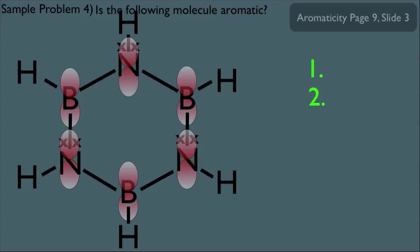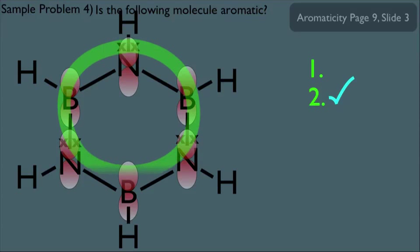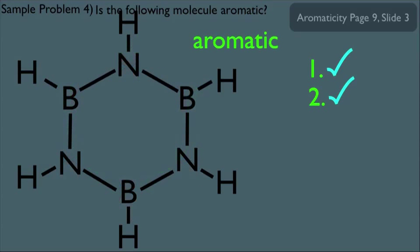Counting our number of pi electron pairs: this lone pair is one pair, this is a second pair, and this is a third pair. So the second criterion is met. And because those borons have unhybridized p orbitals, that creates an uninterrupted pi cloud, so the first criterion is also met. Therefore, this molecule is definitely aromatic.